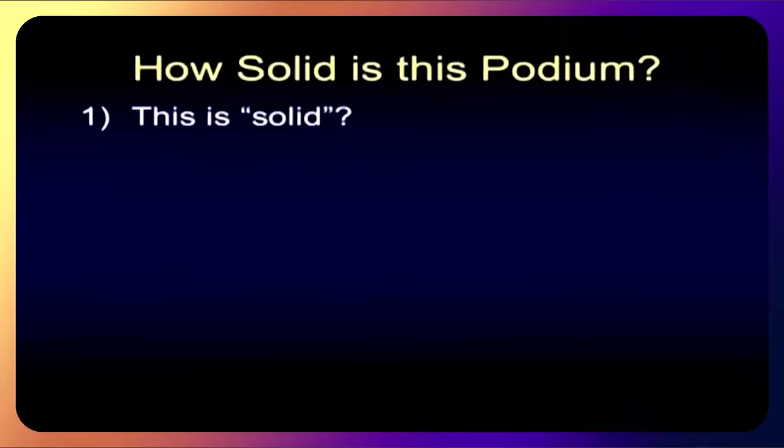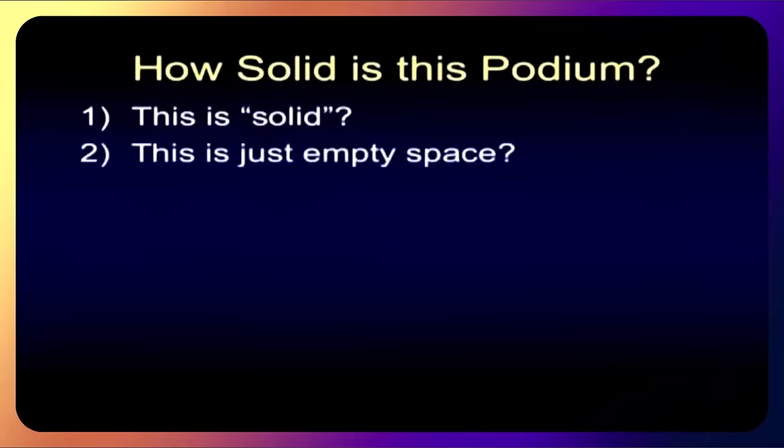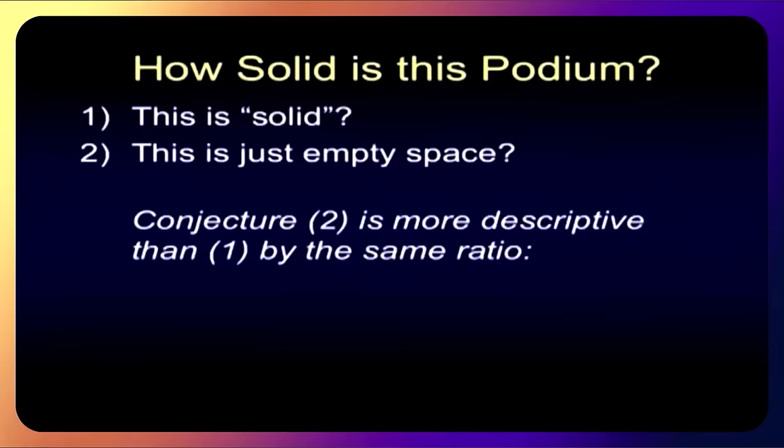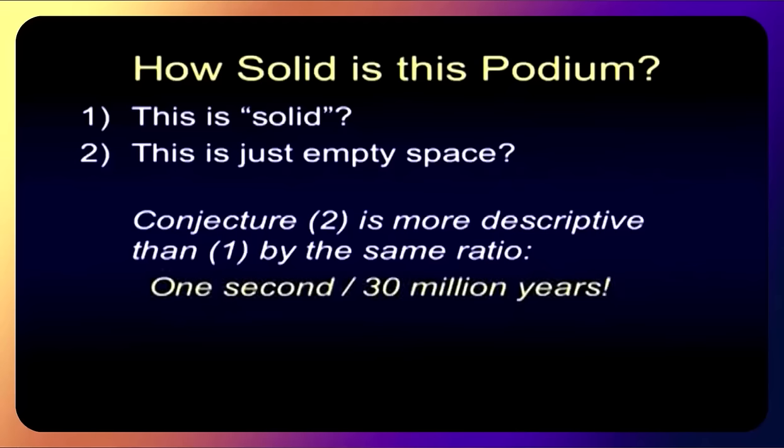What does that mean? That is a ratio of one second to 30 million years. 10 to the 15th is a mathematical way of expressing a very large number. One second to 30 million years. Let me give you a practical example of this. I have a podium here. And if I said that this is solid, boy, it sure feels solid. Is this solid? I say it's solid. Mary over here says you're all washed up. There's nothing here. She is more right than I am by that ratio.